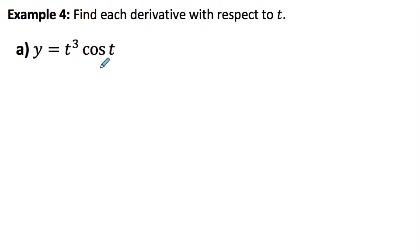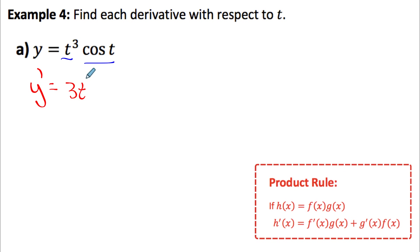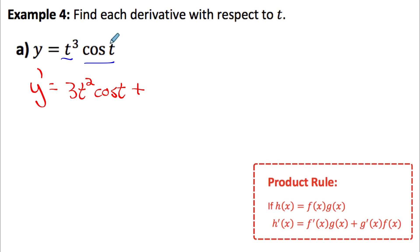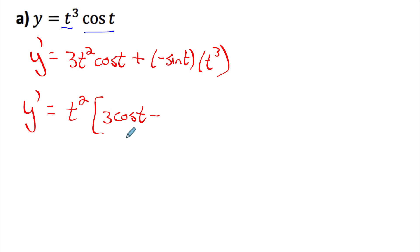Example 4: differentiate with respect to t. For t cubed times cosine t, we use product rule. Derivative of the first function (t cubed) is 3t squared, times the second (cos t), plus derivative of the second (negative sine t) times the first (t cubed). We can factor out t squared to get t squared times (3 cos t minus t sin t).